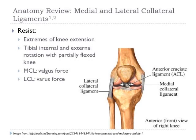The medial collateral ligament, also known as the MCL, attaches proximally at the medial femoral epicondyle and distally at the upper medial surface of the tibia. The posterior fibers of this ligament blend with the medial meniscus. The lateral collateral ligament, also known as the LCL, attaches proximally at the lateral femoral epicondyle and distally to the inferior fibular head. Both ligaments help resist the extremes of knee extension and tibial internal and external rotation with the knee partially flexed. Additionally, the MCL and LCL protect against valgus and varus forces to the knee respectively.